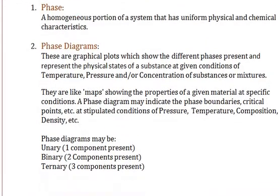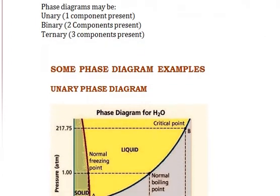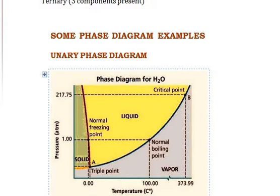We are going to start with the unary phase diagram — specifically the phase diagram for water. As you can see from this phase diagram, it is a plot of pressure against temperature, with temperature in degrees Celsius and pressure in atmospheres. The lines serve as the phase boundaries separating the solid phase from the liquid phase and from the vapor phase. At point A, where the three lines intersect, is the triple point where there is equilibrium and coexistence of all three phases.